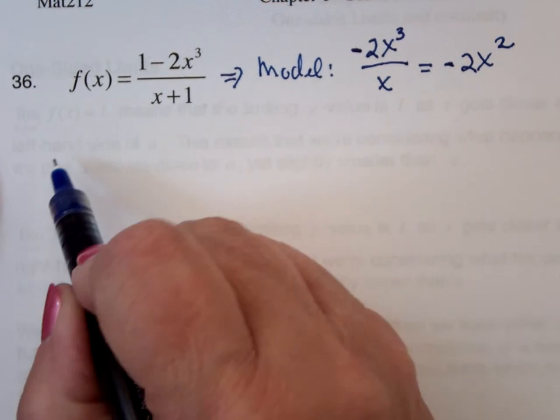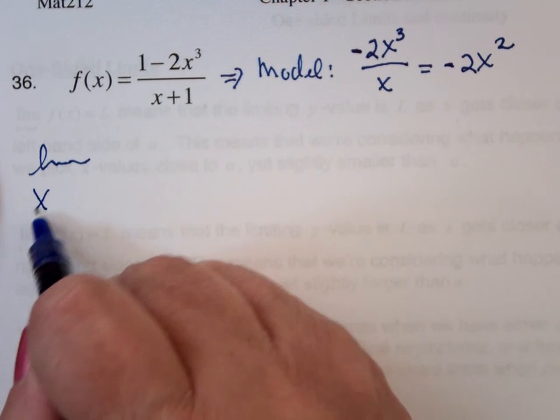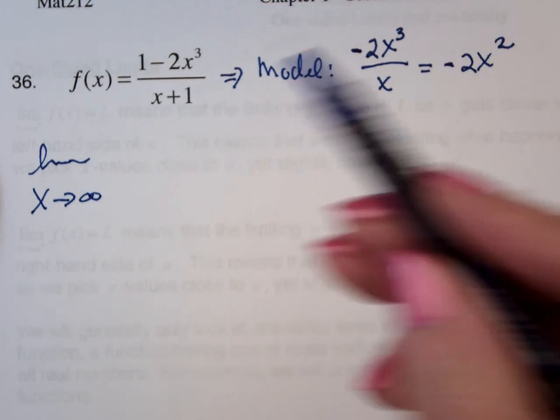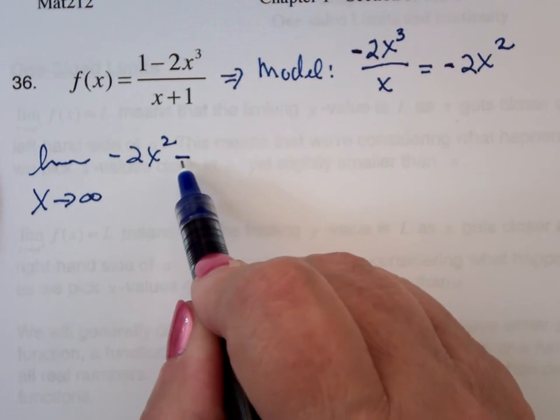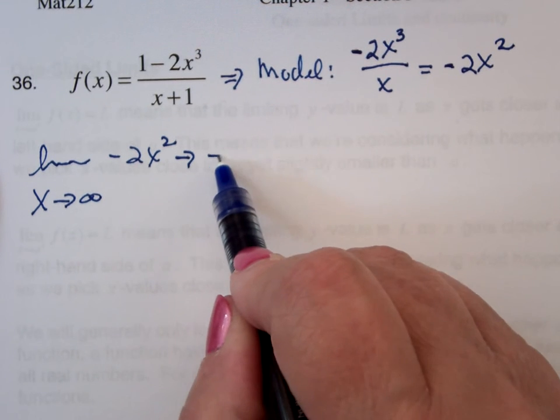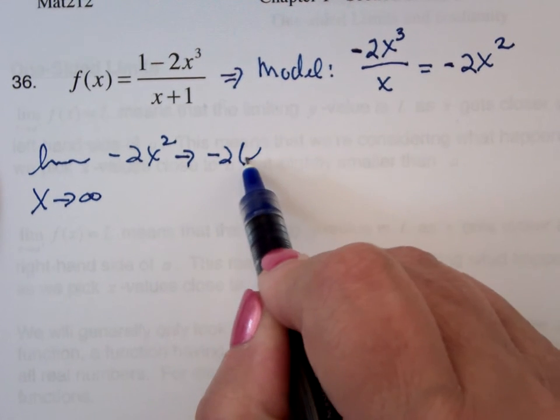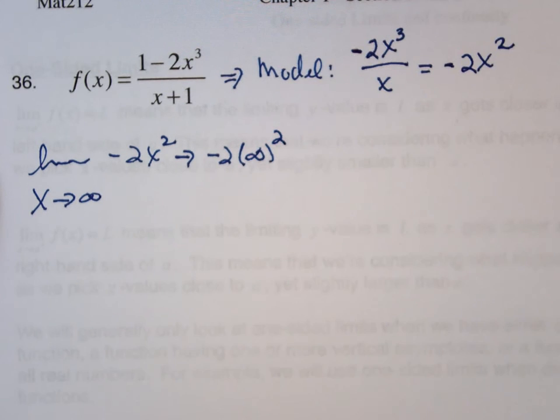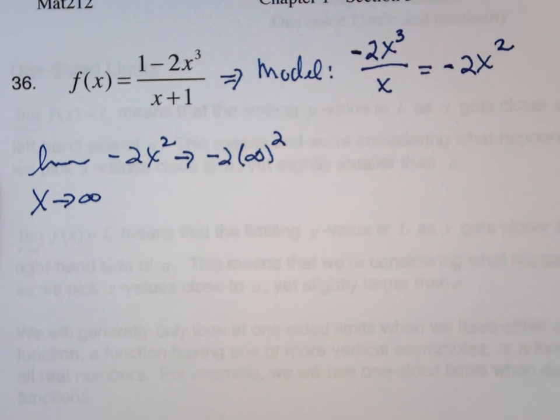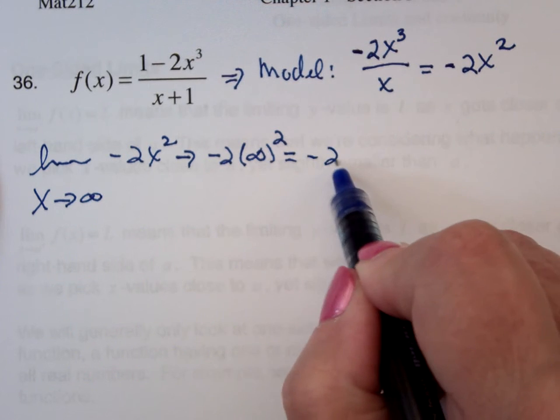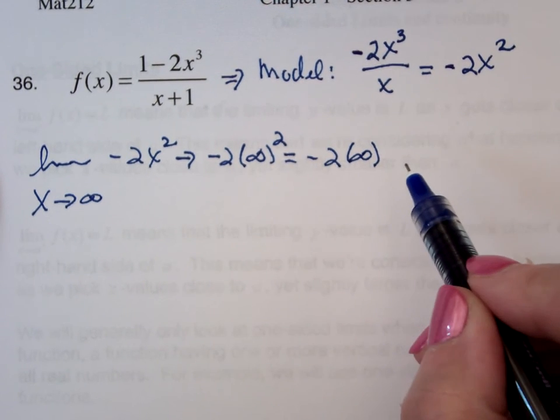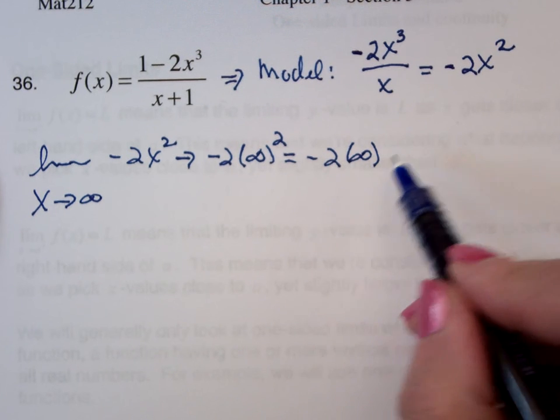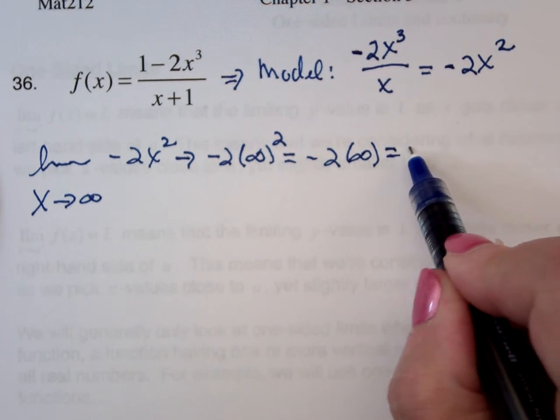So now I'm going to look at the limit as x approaches infinity of negative 2x squared, which means that I'm looking at negative 2 times infinity squared, which is negative 2, infinity squared is just infinity, and negative 2 times infinity is what? Negative infinity.